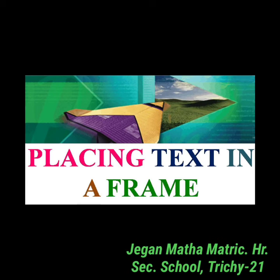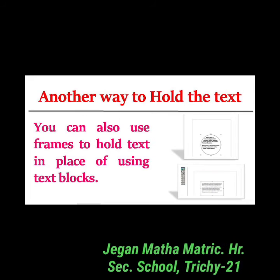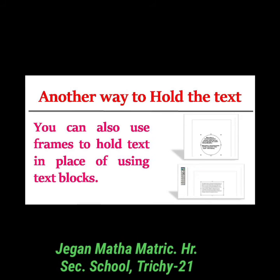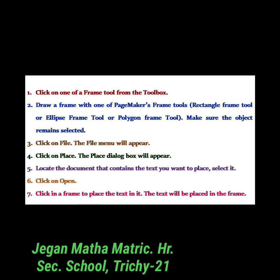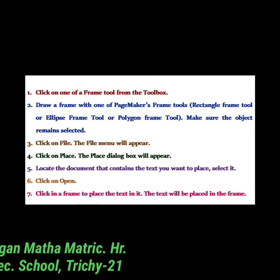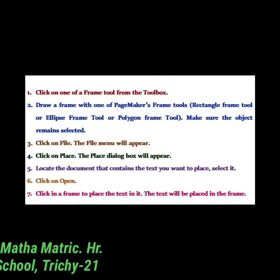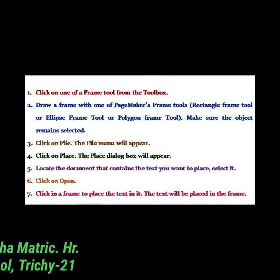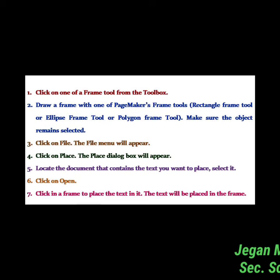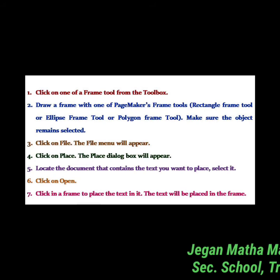Placing text into a frame: you can use a frame to hold text instead of using a text block. Steps: click one of the frame tools from the toolbox and draw a frame — either the rectangle, ellipse, or polygon frame tool — making sure the object remains selected. Then click File menu and click Place. The Place dialog box will appear. Locate the document containing the text, select it, and click Open. Now click in the frame to place the text. The text will be placed in the frame.